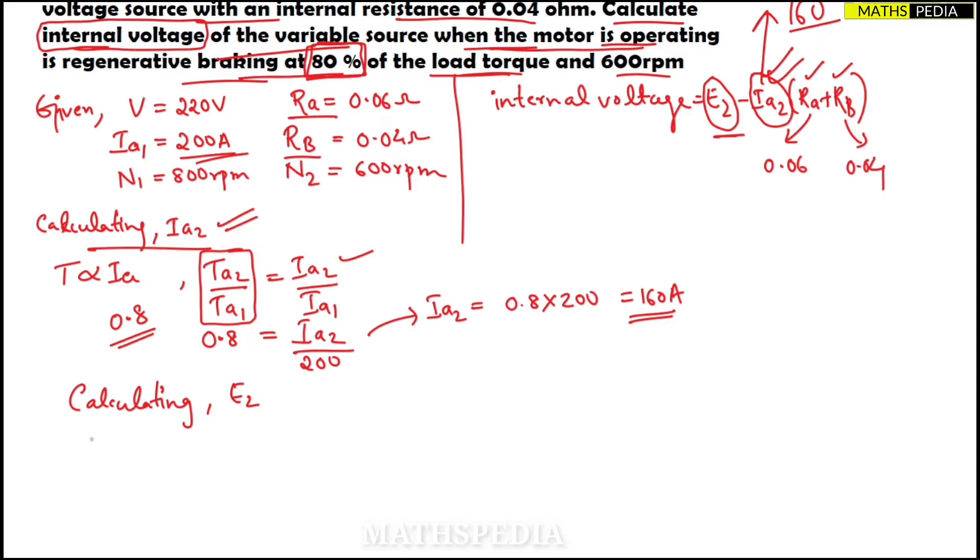Calculating E2: remember the formula E2/E1 = N2/N1. We have N2 and N1 given. Now E1 is V - Ia·Ra, remember this formula.